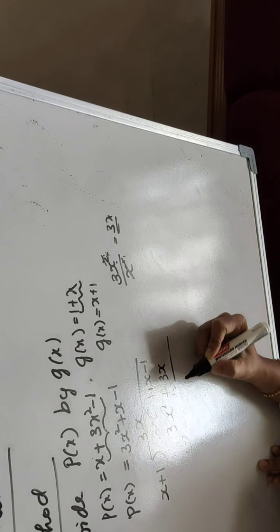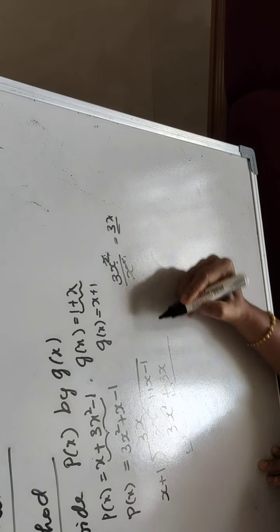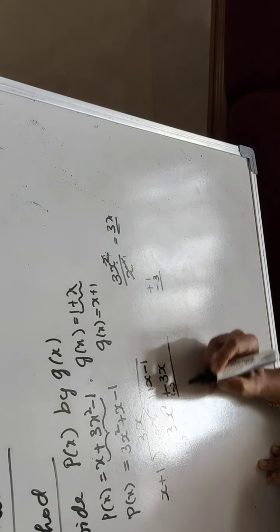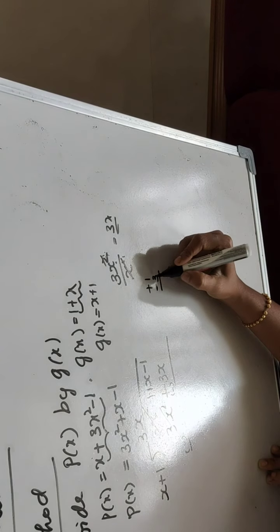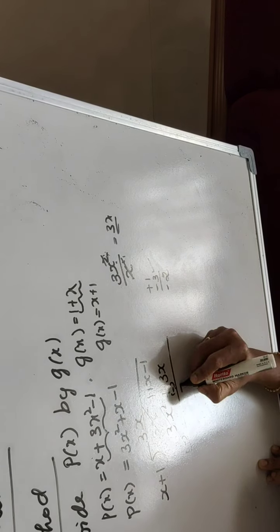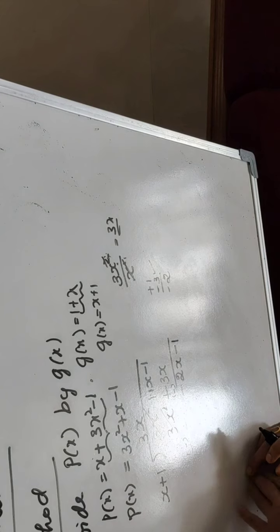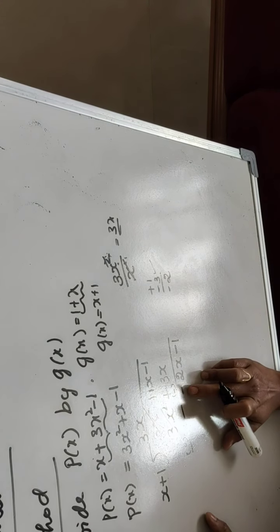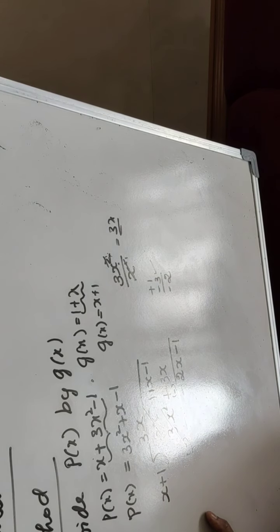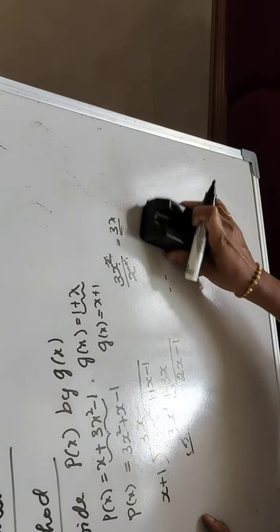After changing the sign, consider only the changed signs, not the original. We have plus x and minus 3x. One is plus and one is minus, so we subtract and take the sign of the bigger number. That gives minus 2x. Bring down minus 1. When a minus appears in the result, write minus in the quotient immediately — don't miss it.